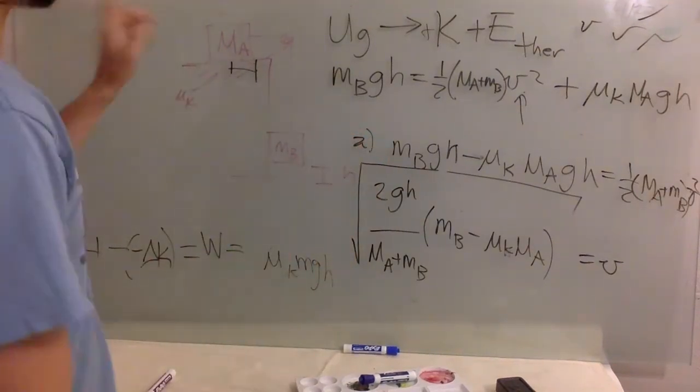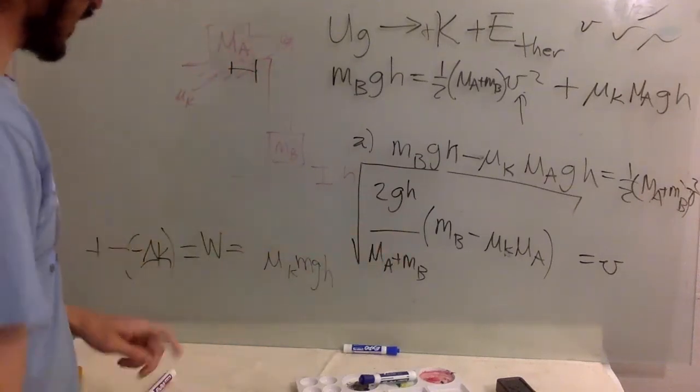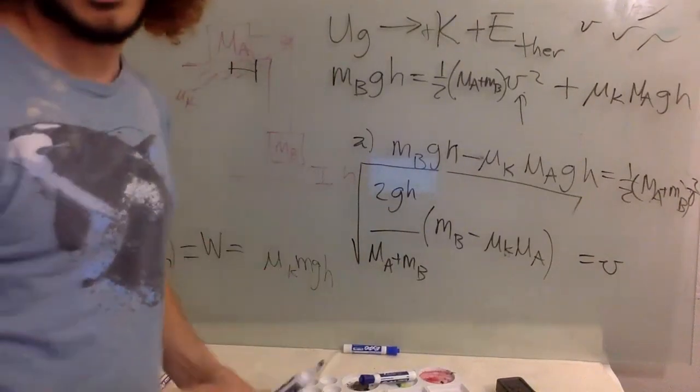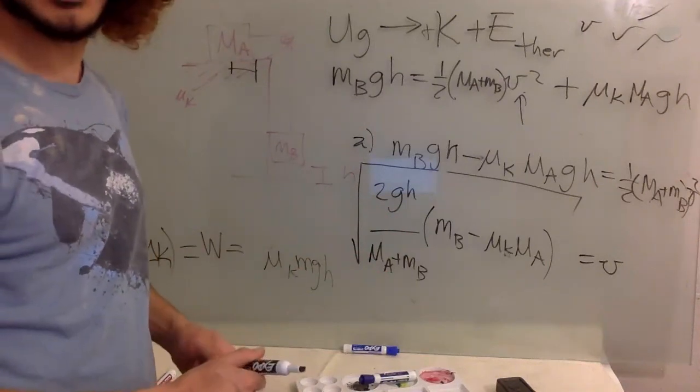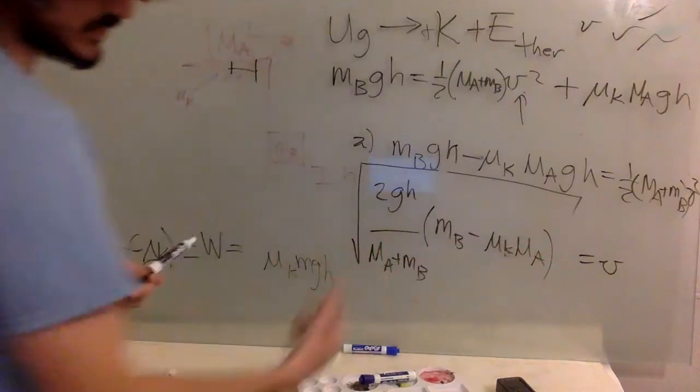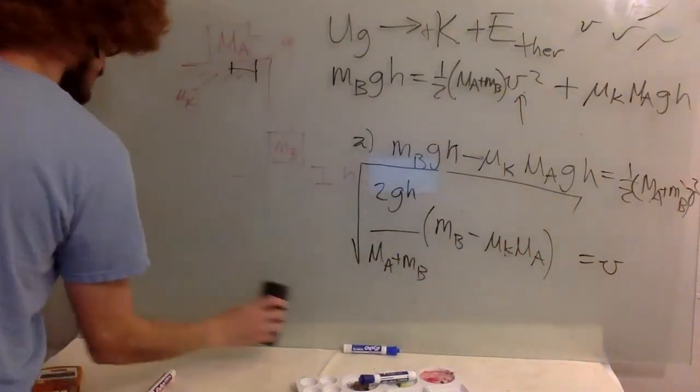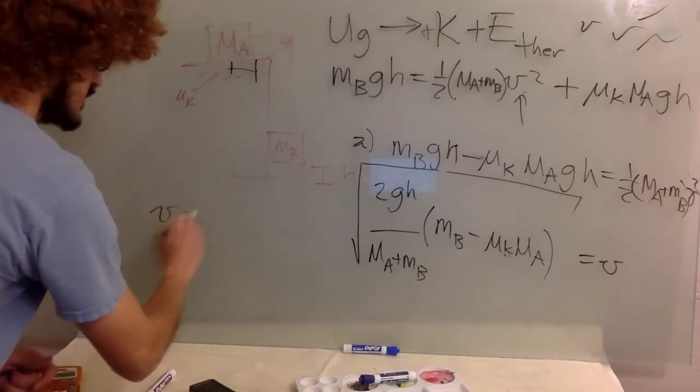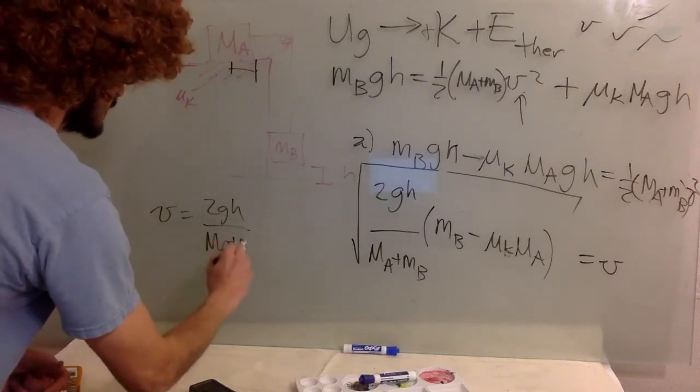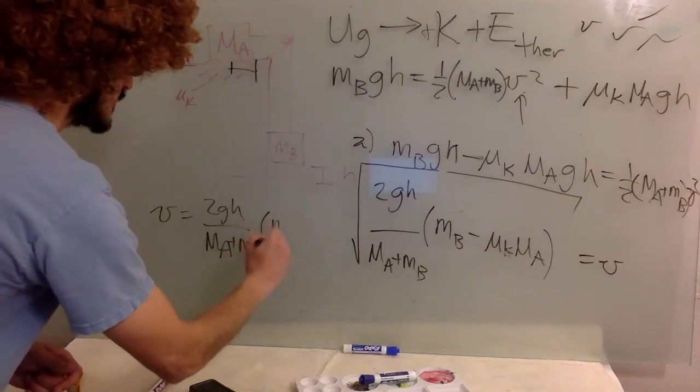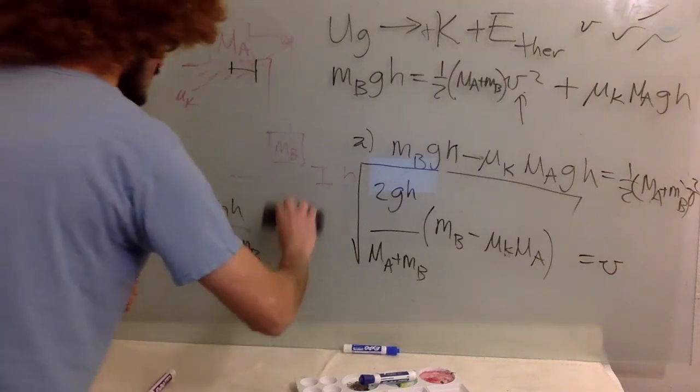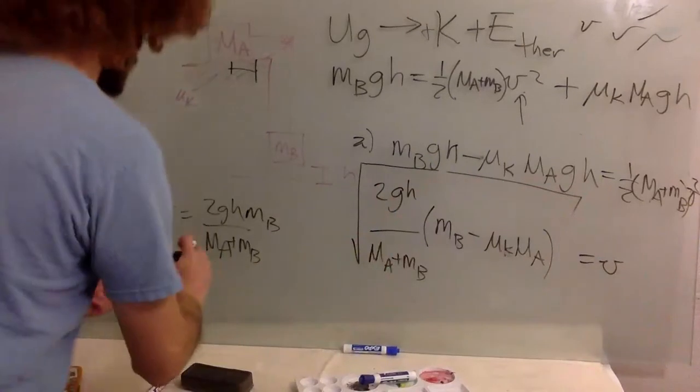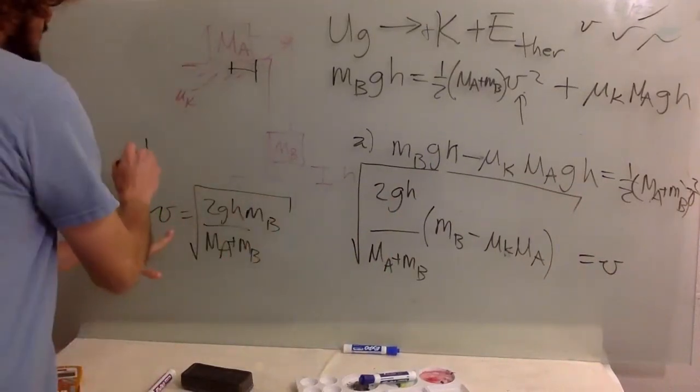And then something that I added to this problem was what happens when there is no friction. And well, you can solve the problem in general for the friction case. And if there is no friction, then this mu K is zero, right? So it will be 2 g h over MA plus MB times MB. People are clapping already. They thought that I'm done. I am done. So this is B, no friction.